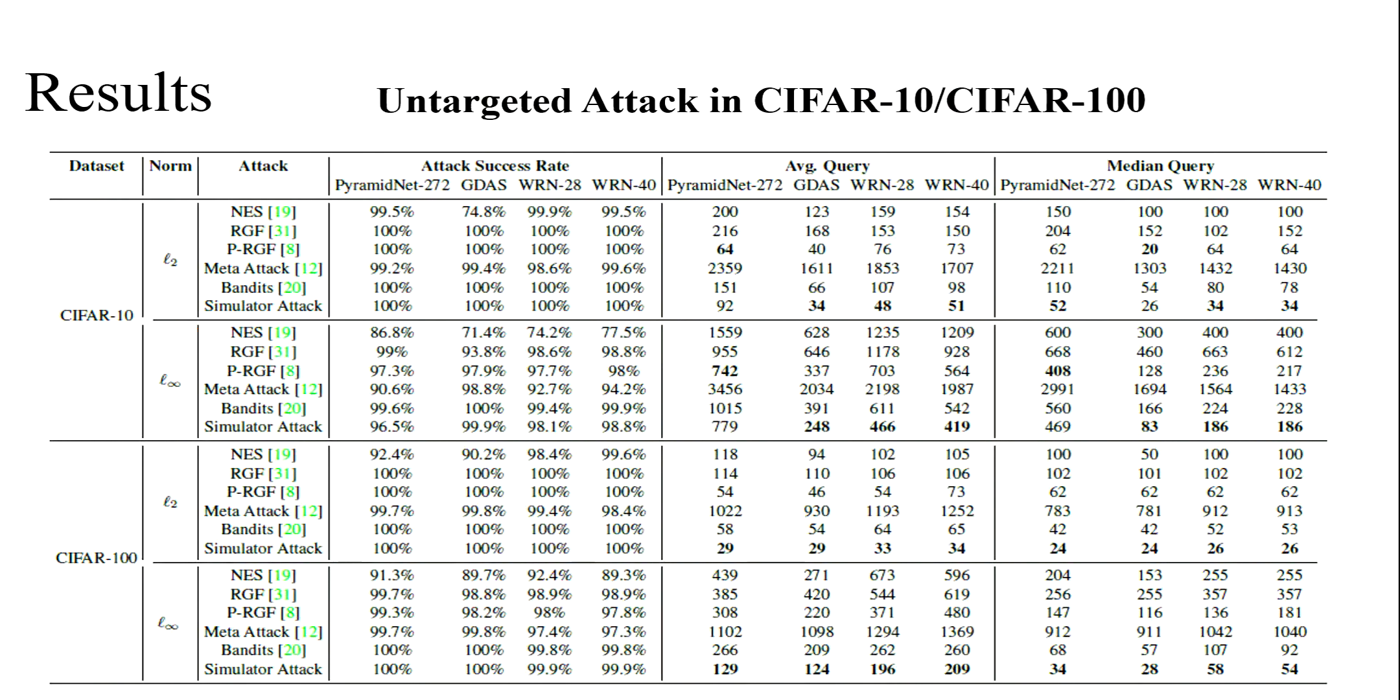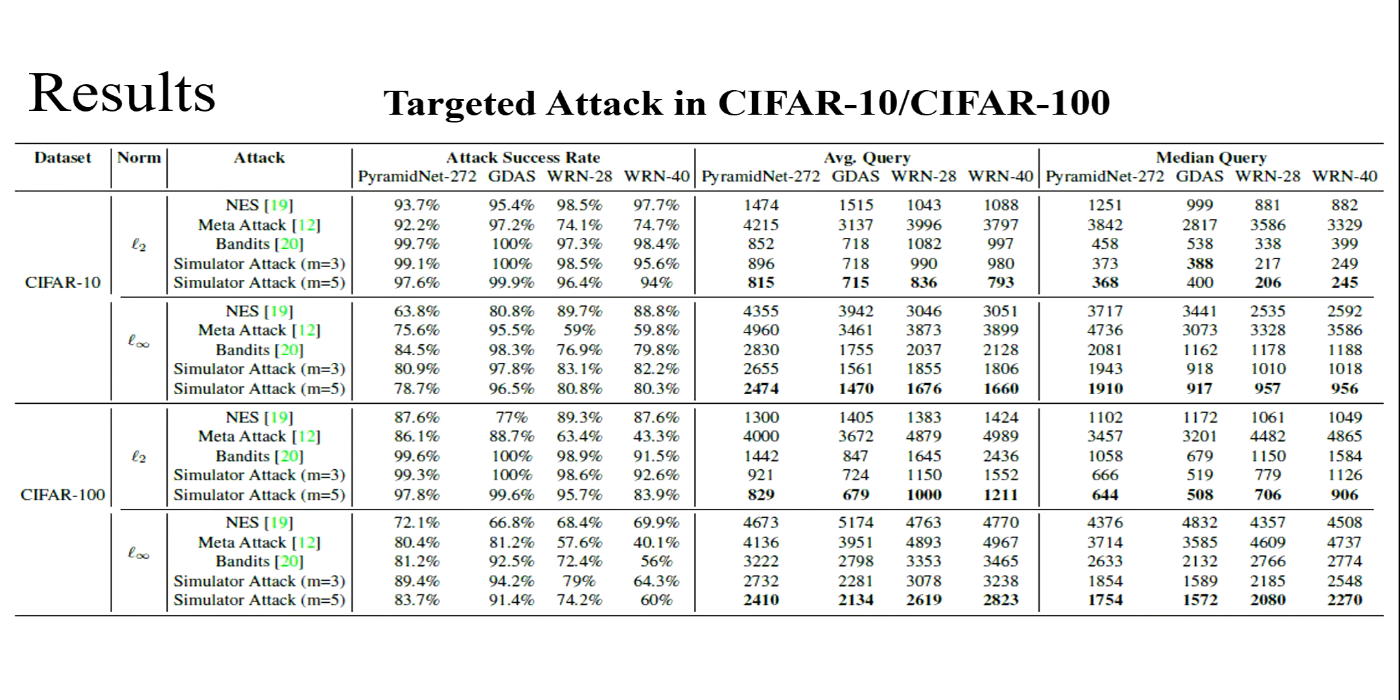Our experiment results are conducted in CIFAR-10, CIFAR-100, and TinyImageNet datasets. In untargeted attack of CIFAR-10 and CIFAR-100 experiments, this table shows the results. We achieve the highest attack success rate and the lowest query numbers. The similar results can be found in targeted attack.